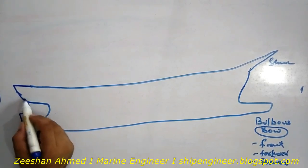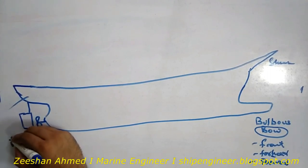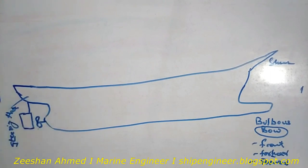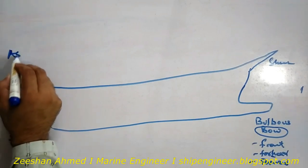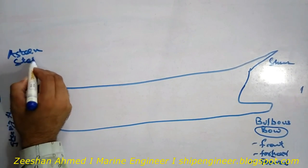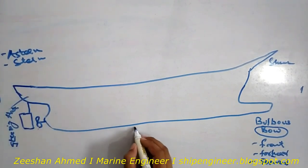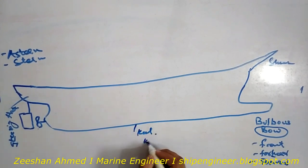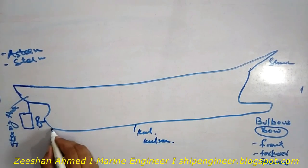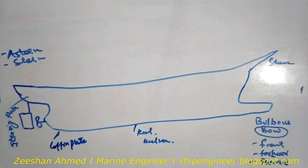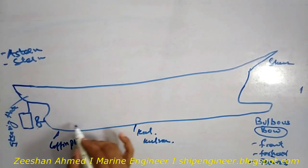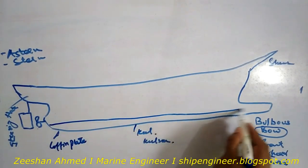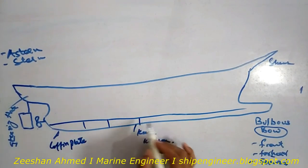This is also called the steering flat or steering room. This is also known as the stern of the ship. This is known as the keel, sometimes called keel sun. Here it is the coffin plate — it's called coffin plate because it's of a coffin shape. There will be a line which determines the double bottom of the ship.